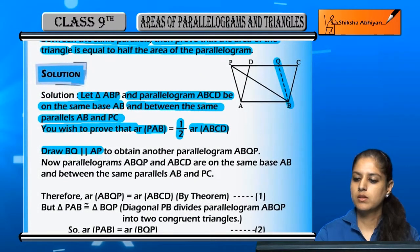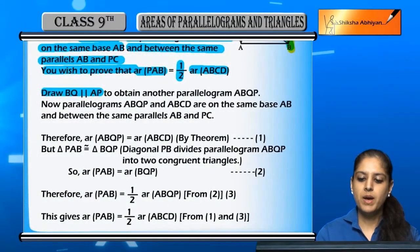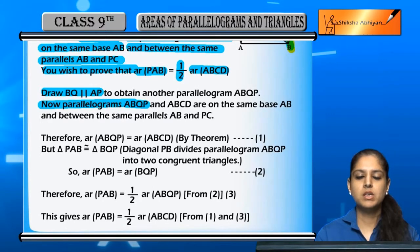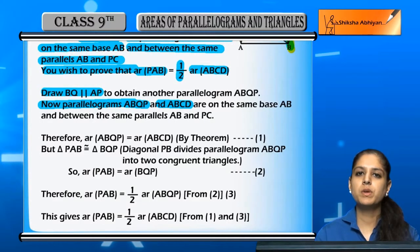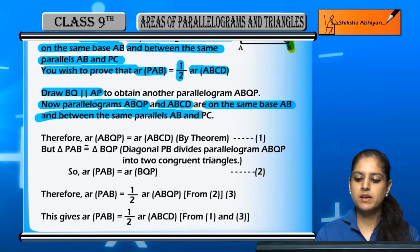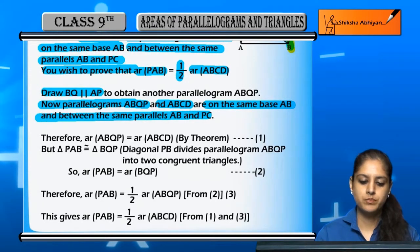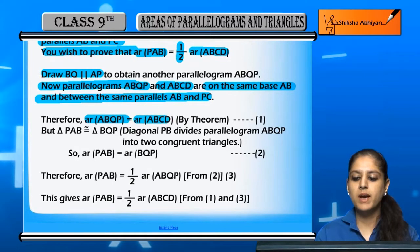We have drawn BQ, which makes ABQP a parallelogram. Since ABQP is a parallelogram constructed on base AB, and ABCD is also a parallelogram on the same base AB between the same parallel lines, their areas are equal.